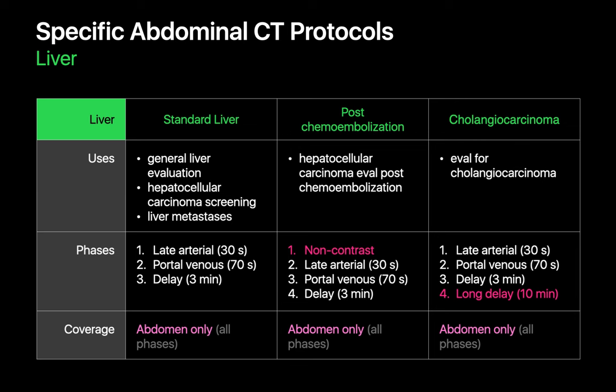The post-chemoembolization protocol is used in patients with HCC who've been chemoembolized by interventional radiology. Since chemoembolic material is hyperattenuating, abnormal soft tissue enhancement might be difficult to visually distinguish from chemoembolic material on some scans. Consequently, the post-chemoembolization protocol consists of a standard liver protocol with the addition of a non-contrast scan. Cholangiocarcinomas exhibit considerably more delayed contrast enhancement than other liver lesions, so the cholangiocarcinoma protocol consists of a standard liver protocol with the addition of a very delayed scan.